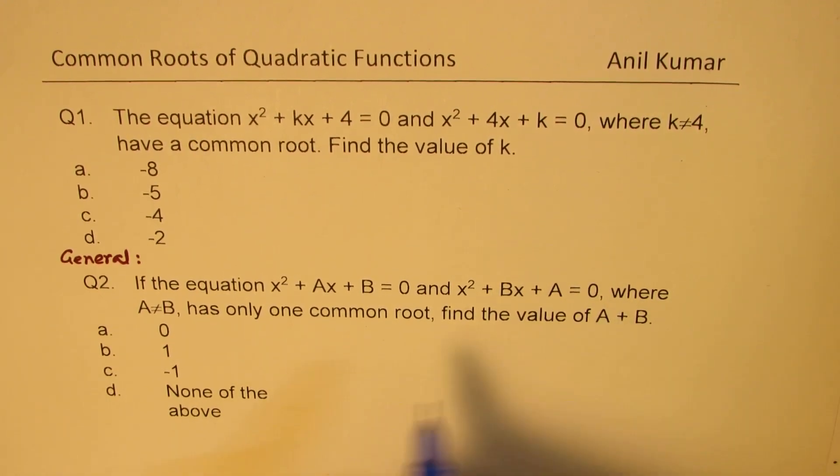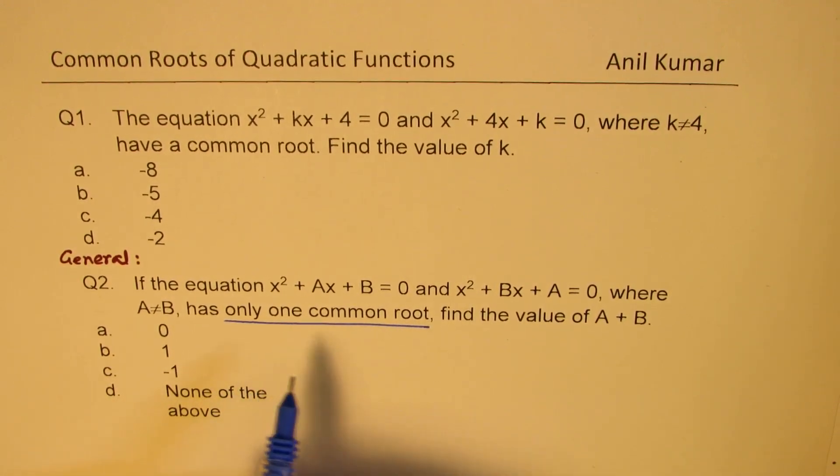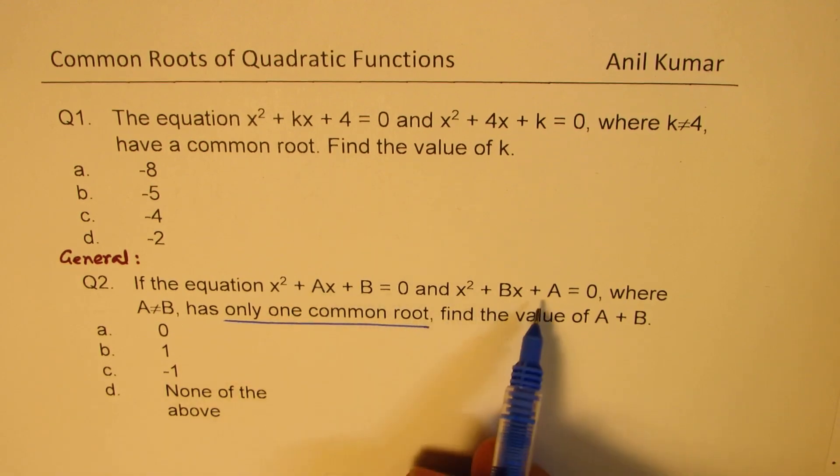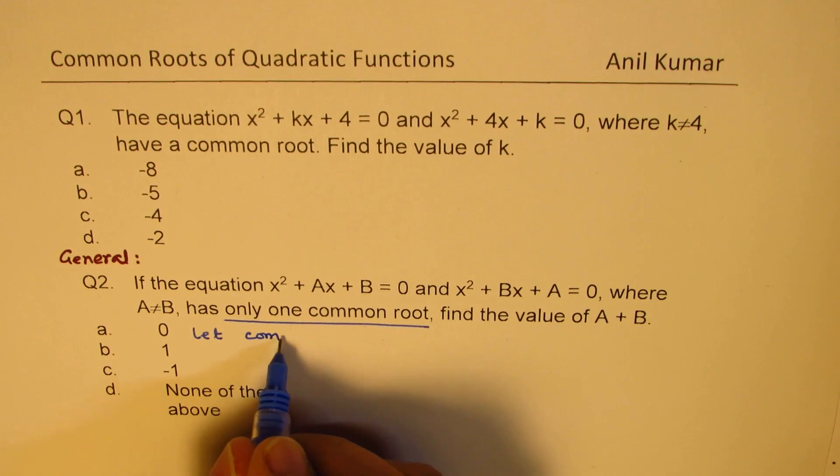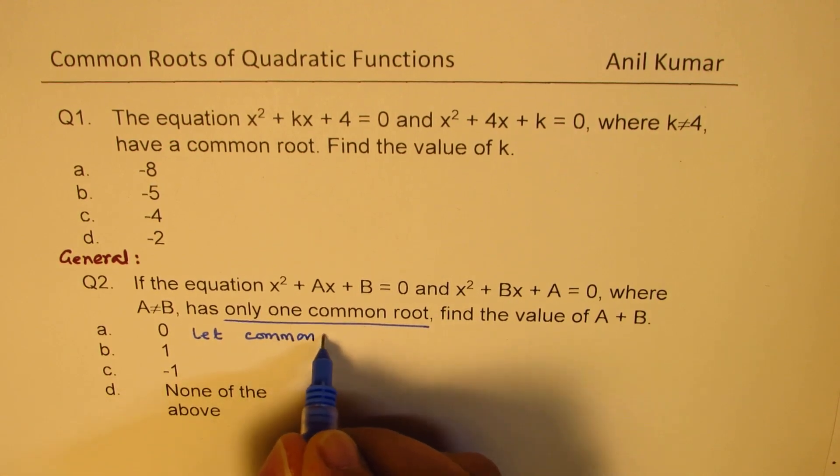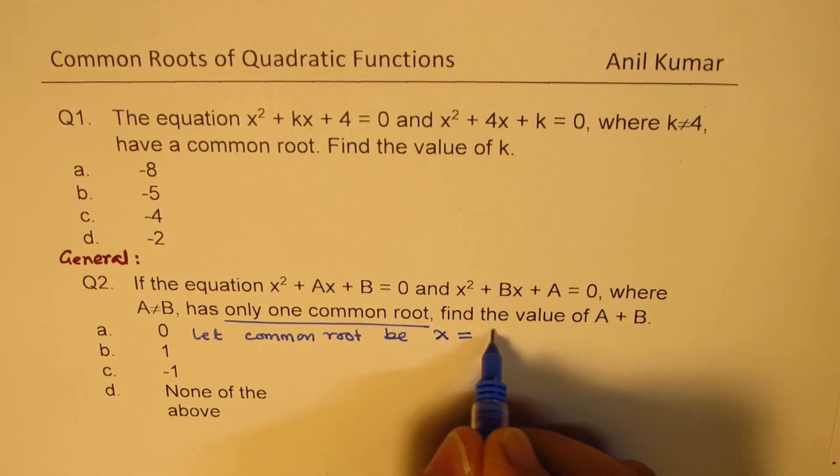Now, when we say that they have only one common root, it means what? It means that root will satisfy both the equations. So let common root be x = α, right?